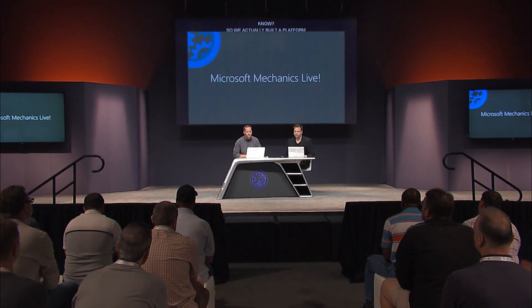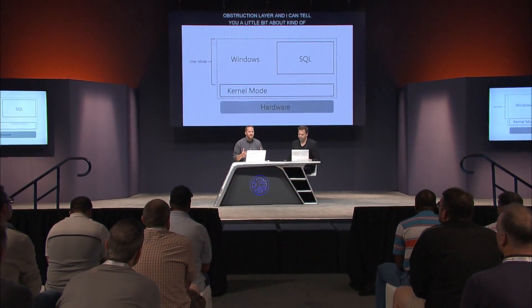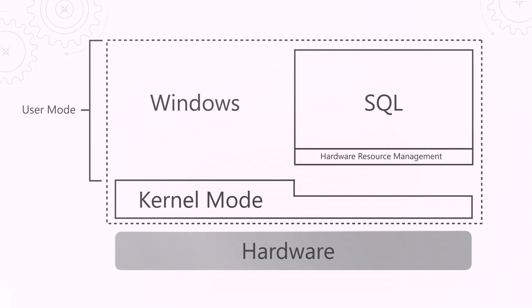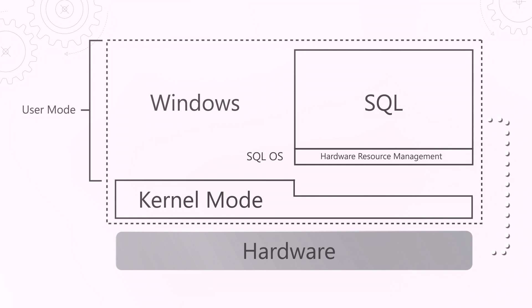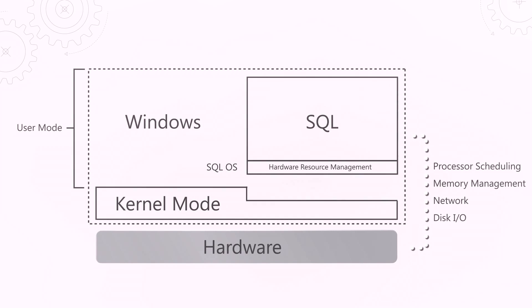Prior to SQL Server 2005, SQL Server ran as a user mode process just like any other application. It depended on the hardware resource management in the kernel to interact with the hardware. In SQL Server 2005, we wanted better performance, so we brought that hardware resource management into SQL Server in the user mode process as part of what we call SQL OS, which is now responsible for all processor scheduling, memory management, and network and disk I/O to achieve maximum performance.